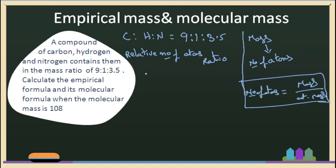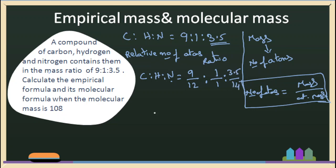We can convert the mass ratio of different elements into the ratio of the number of atoms present in the molecule. So, the relative number of atoms ratio: carbon to hydrogen to nitrogen equals carbon's mass ratio 9, divided by the atomic mass of carbon 12; hydrogen's mass ratio 1, divided by the atomic mass of hydrogen 1; nitrogen's mass ratio 3.5, divided by the atomic mass of nitrogen 14. So it becomes 9/12 : 1/1 : 3.5/14.